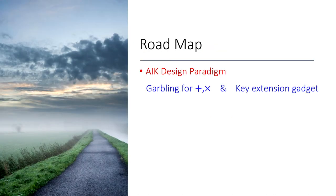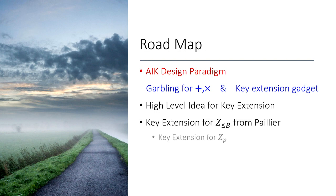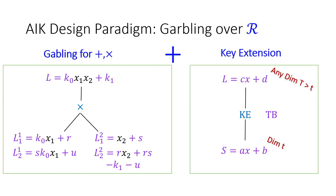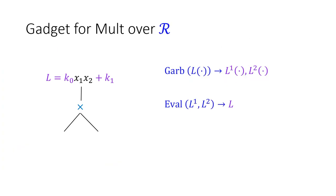Next, I'll introduce the AIK paradigm which our work builds upon, then give the high-level idea for constructing the core component called the key extension gadget, followed by our construction for this gadget in the bounded integer setting from Paillier. The AIK paradigm says: to have garbling over R, it's enough to have gadgets for garbling arithmetic gates individually, plus the key extension gadget. The gadgets for individual gates are relatively simple and known from prior work.